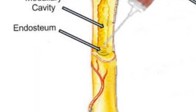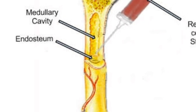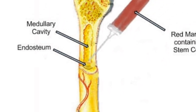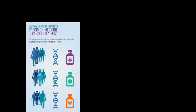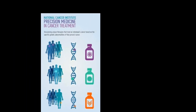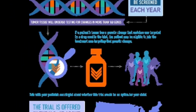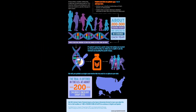Number 7: Stem cell transplant — procedures that restore blood-forming stem cells in cancer patients who have had theirs destroyed by very high doses of chemotherapy or radiation therapy. Number 8: Precision medicine — helps doctors select treatments that are most likely to help patients based on the genetic understanding of their disease.